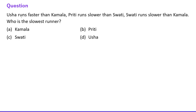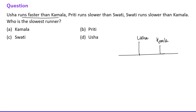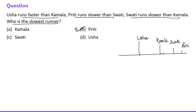Next question: Usha runs faster than Kamla. Swati runs slower than Kamla. Preeti runs slower than Swati. So the order from fastest to slowest is: Usha > Kamla > Swati > Preeti. Preeti is the slowest runner.